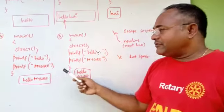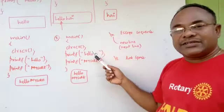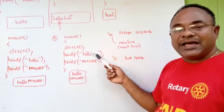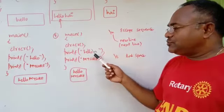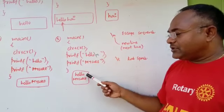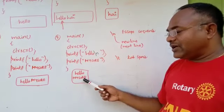So what if you use an escape sequence like backslash n? Backslash n is a non-printable character. Once I use backslash n, look at the output here. Hello and in the next line Mysore.